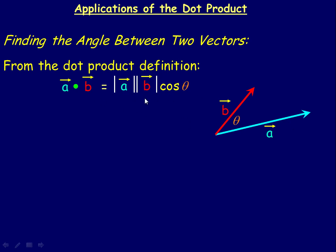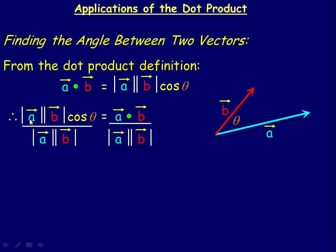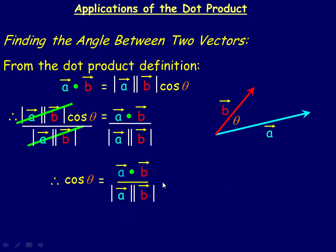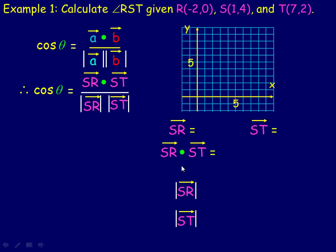From the dot product definition, if we take the dot product definition and divide both sides by the product of the magnitudes of A and B, they divide out on the left, and that's how we isolate cos θ. So cos θ is just A dot B over the product of the two magnitudes. This is just the rearranged dot product formula solved for cos θ.